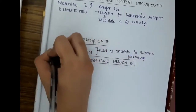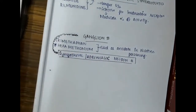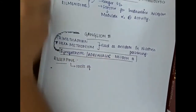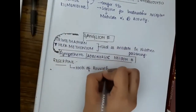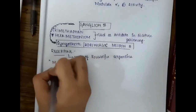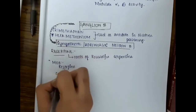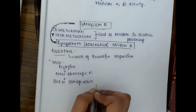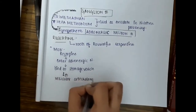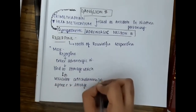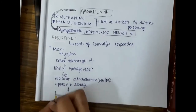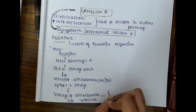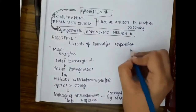The first adrenergic neuron blocker is reserpine, which is obtained from the roots of Rauwolfia serpentina. Reserpine enters the adrenergic neuron and binds to the storage vesicle, inhibiting vesicular catecholamine uptake and storage of noradrenaline and dopamine. This causes leakage of catecholamines into the cytoplasm, where they are destroyed by monoamine oxidases.